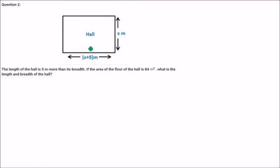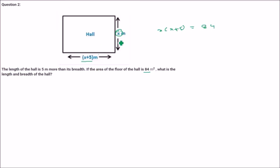The length of the hall is 5 meters more than the breadth. So if the breadth is x, the length is x plus 5. If the area of the floor of the hall is 84 meter square, we need to find the length and breadth. Since it is specifically given that length is 5 more than breadth, x is breadth and x plus 5 is length.